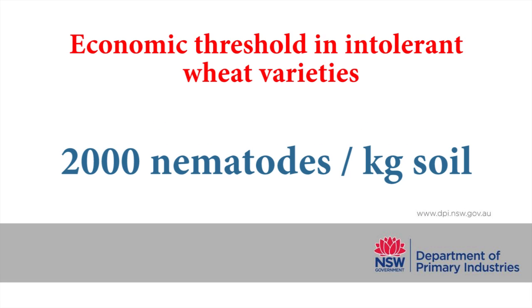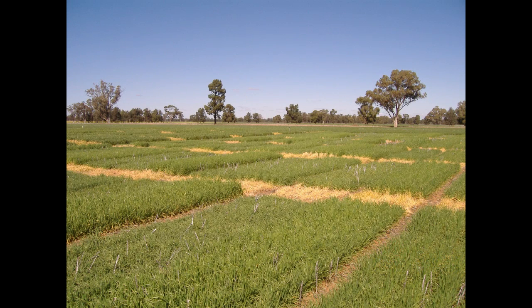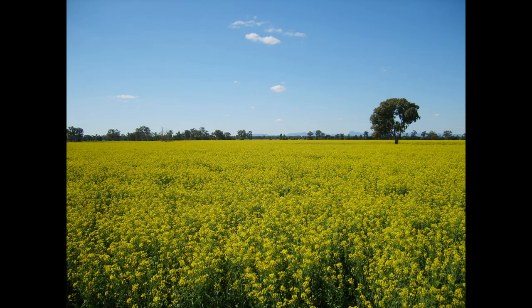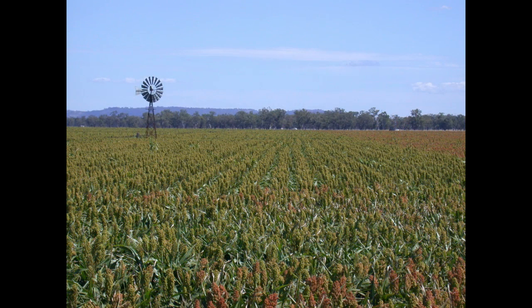A density of 2,000 nematodes per kilogram of soil or higher is the threshold for yield loss in intolerant crops. At these levels or greater, growers need to choose a tolerant crop variety or rotate to a resistant crop according to the identified nematode species.